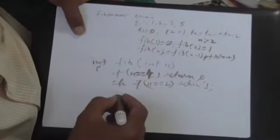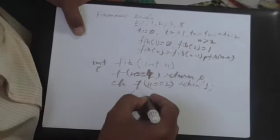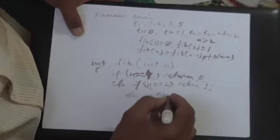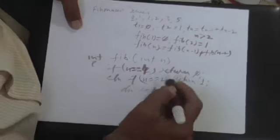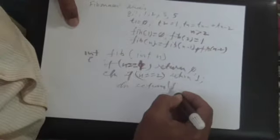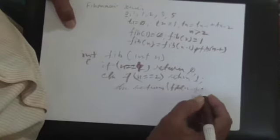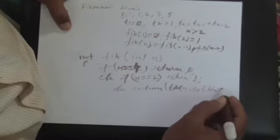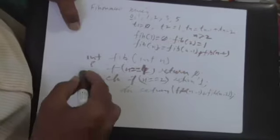Else, you return Fib of n-1 plus Fib of n-2. And you close it. That's all.